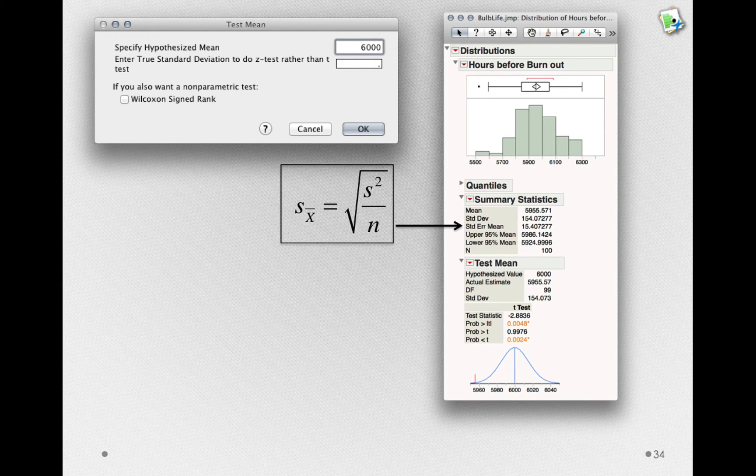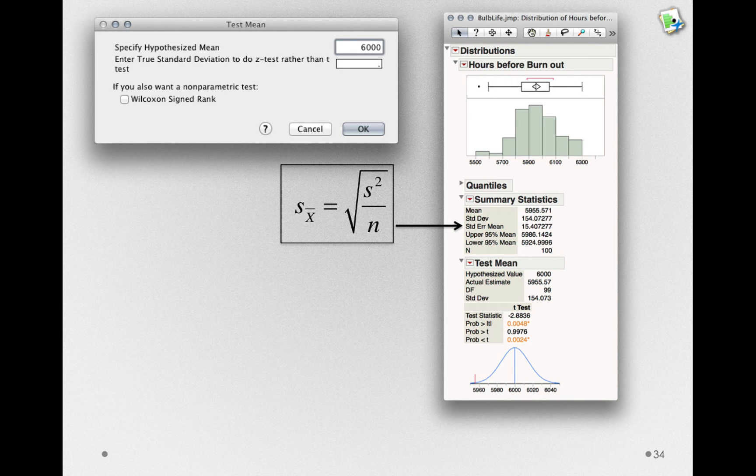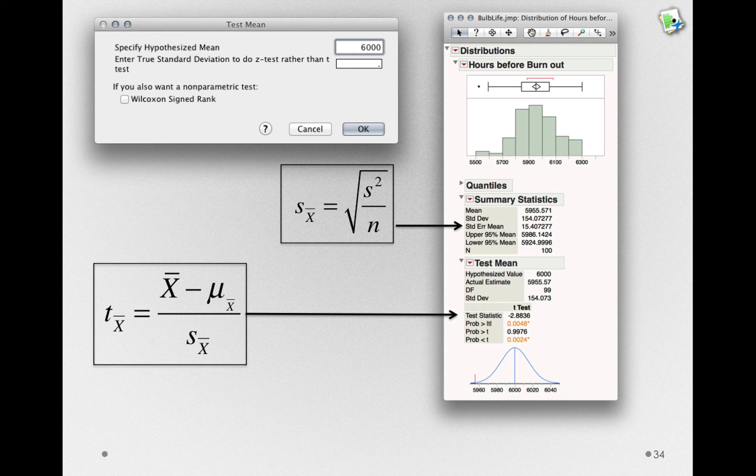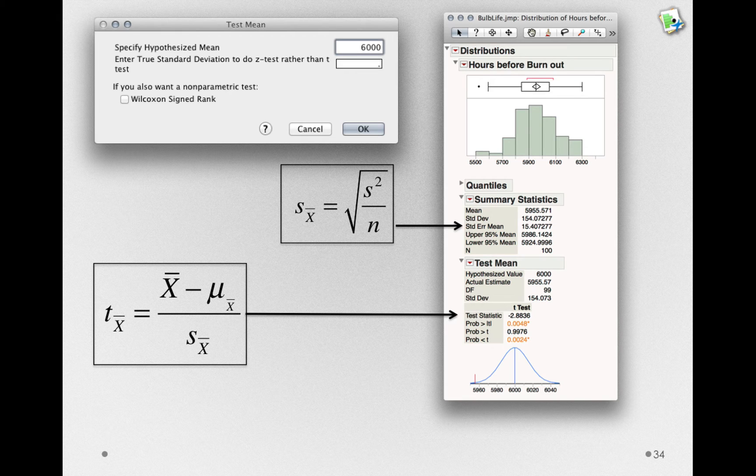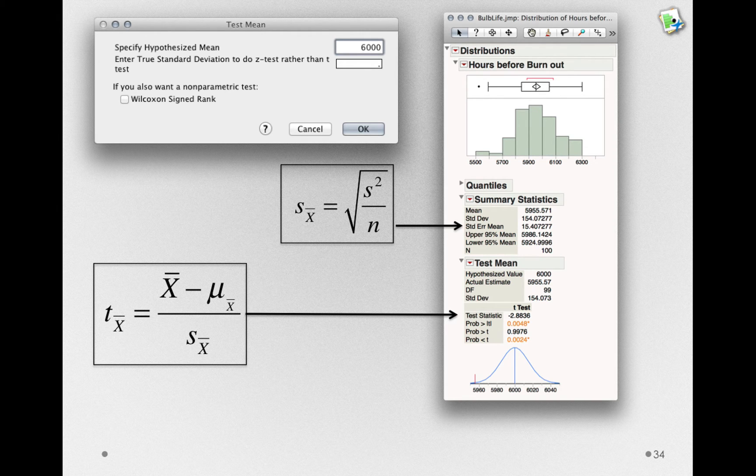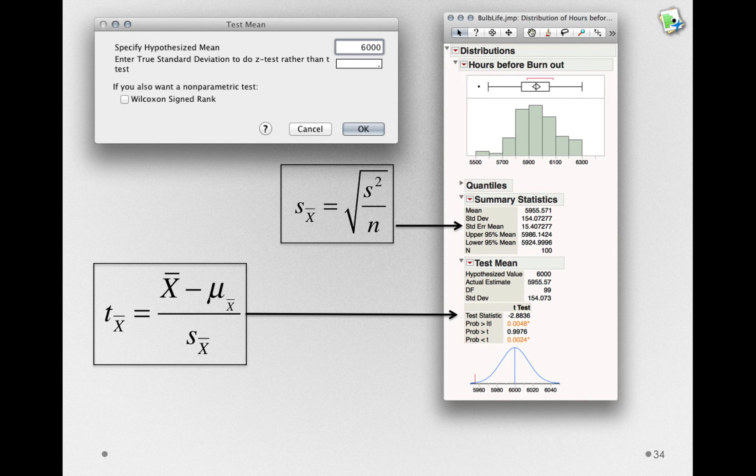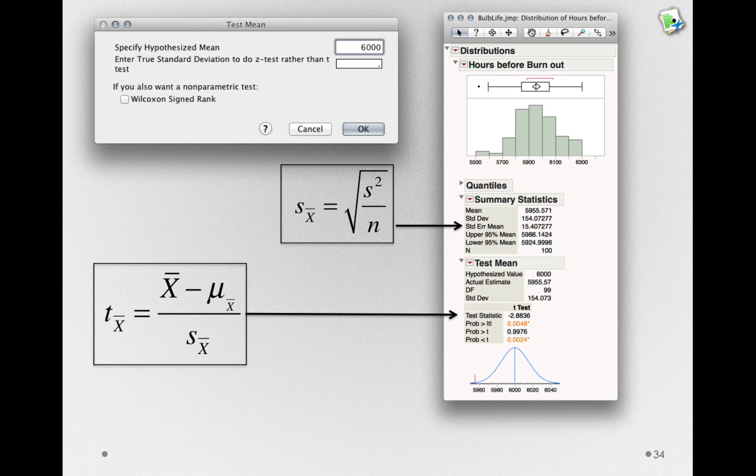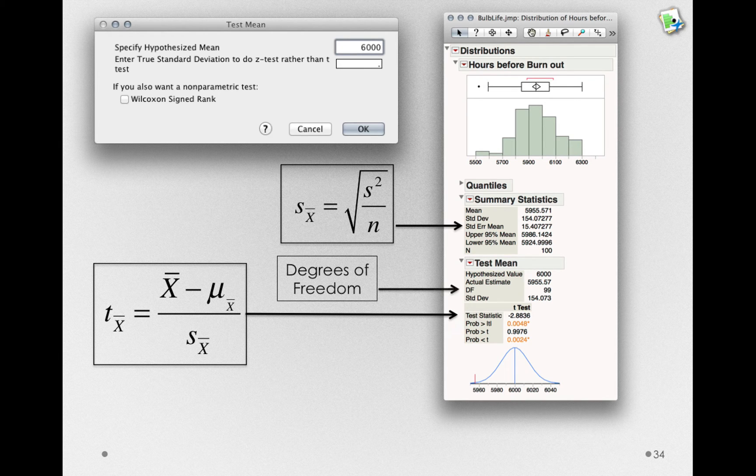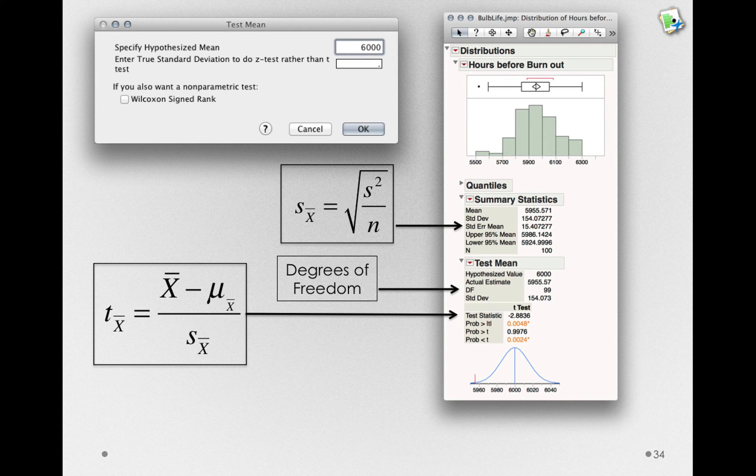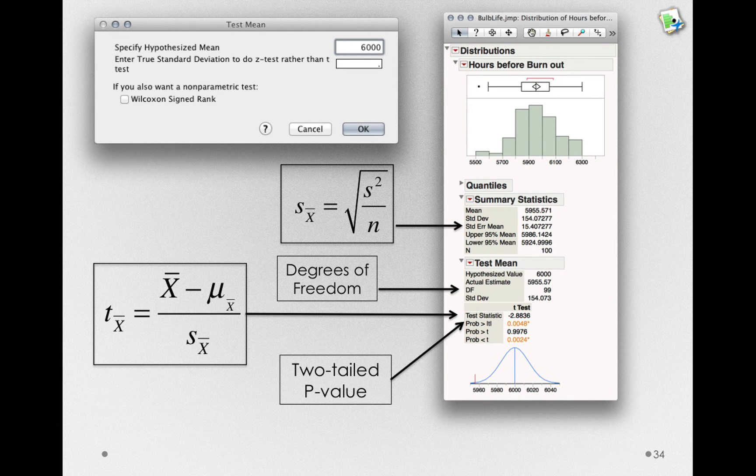Next, we have the actual test statistic, that is, our t sub x bar. This is calculated using the estimated mean, that is, 5,955, minus the presumed mean, the hypothesized mean, of 6,000 hours, divided by that estimated standard error. We also have our degrees of freedom, an idea I'll come back to later, and our two-tailed p-value.